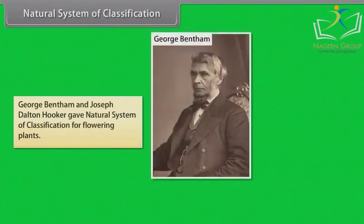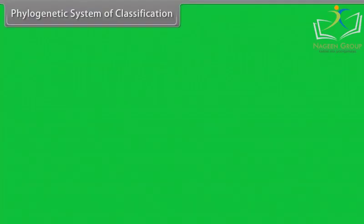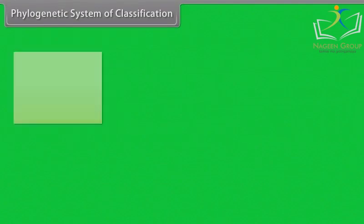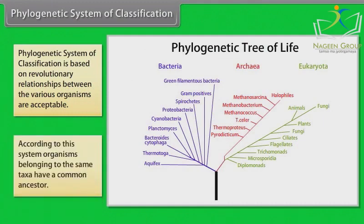George Bentham and Joseph Dalton Hooker gave the natural system of classification for flowering plants. The phylogenetic system of classification is based on evolutionary relationships between the various organisms. According to this system, organisms belonging to the same taxa have a common ancestor.